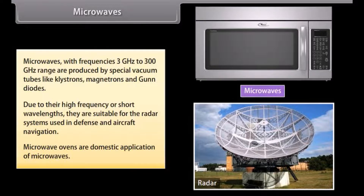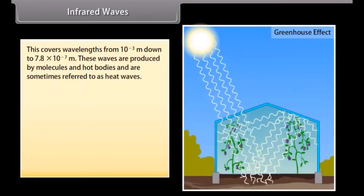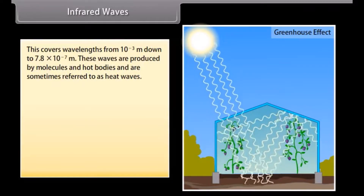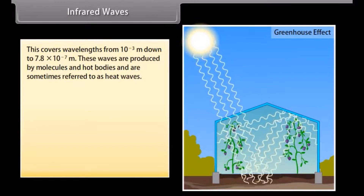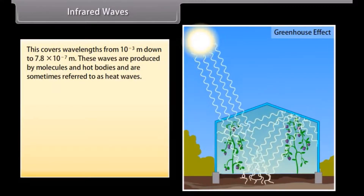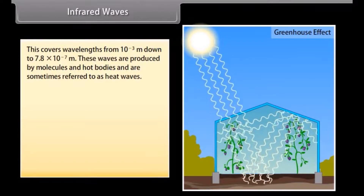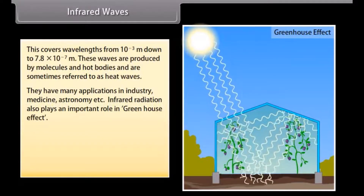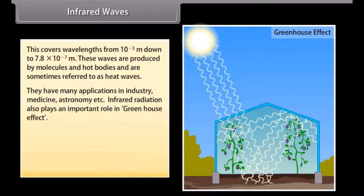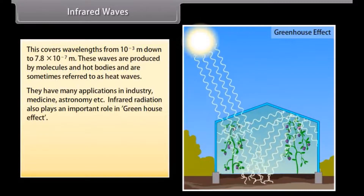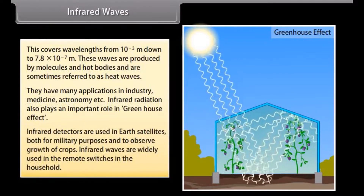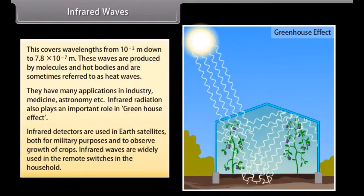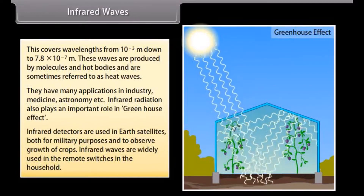Infrared waves cover wavelengths from 10^-3 m down to 7.8 × 10^-7 m. These waves are produced by molecules and hot bodies and are sometimes referred to as heat waves. They have many applications in industry, medicine, and astronomy. Infrared radiation plays an important role in the greenhouse effect. Infrared detectors are used in earth satellites for military purposes and to observe crop growth. Infrared waves are widely used in remote switches in households.